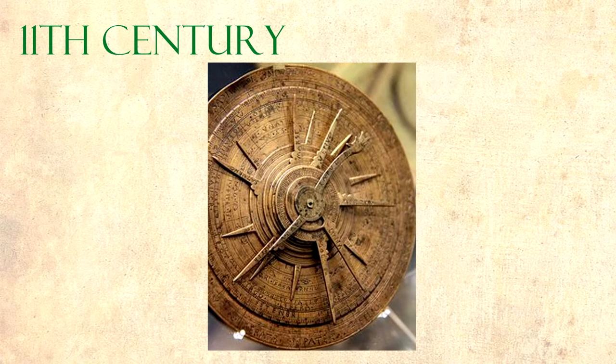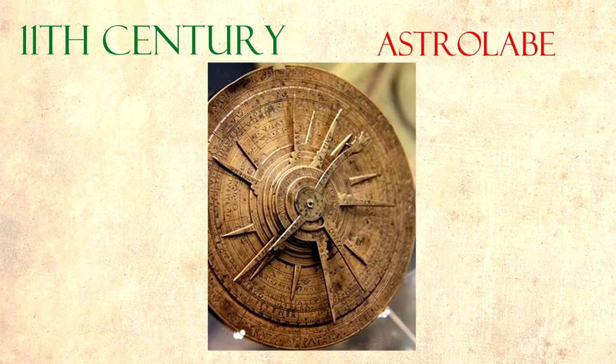In the 11th century, Abu Rayyan al-Biruni, who lived in Persia, invented an analog computer capable of working out several problems in spherical astronomy. Amongst other things, he invented a mechanical geared lunisolar calendar astrolabe.